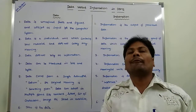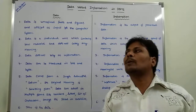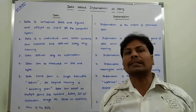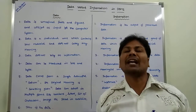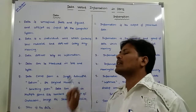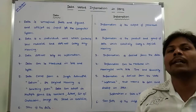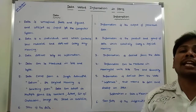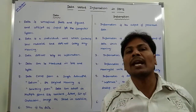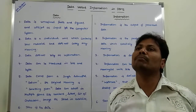Fourth, data can be found in numbers, characters, or sets of characters. That data can be stored in magnetic tapes or a hard disk, and it can be measured in bits or bytes. Whereas information can be measured in meaningful units like time and quantity, such as time and temperature.